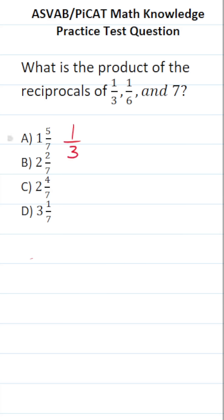So we first have to find the reciprocal of 1/3, 1/6, and 7. To find the reciprocal, the quick way is just to exchange your numerator and denominator. So the reciprocal of 1/3 is going to be 3/1.